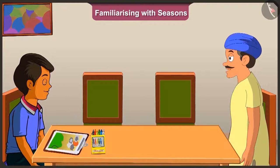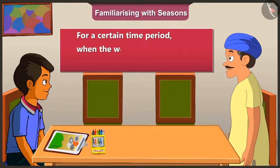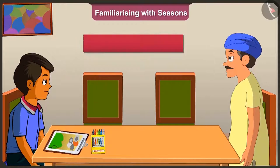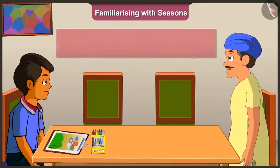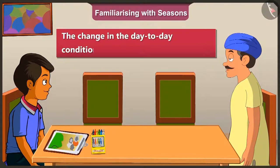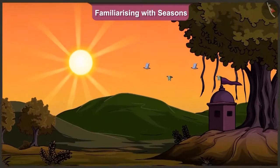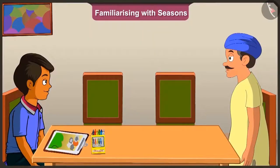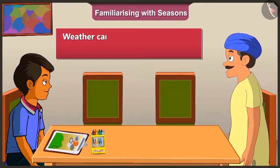Chotu, there are three main seasons in India. For a certain time period, when the weather remains usually the same throughout, it is called a season. But uncle, what is weather? The change in the day-to-day conditions of a place is called weather. For example, there is bright sunshine in the morning and cloudy in the evening. But uncle, how are weather and seasons different from each other? The weather can change every day, but not the season.